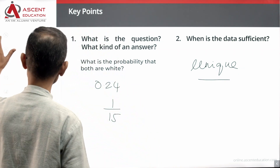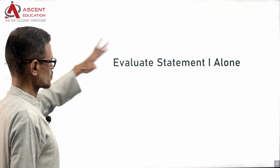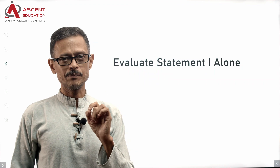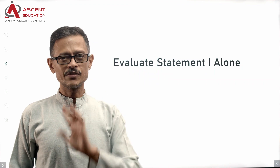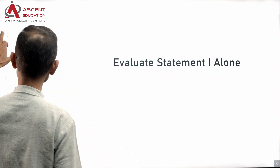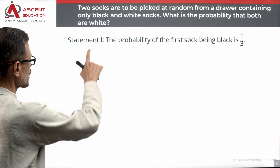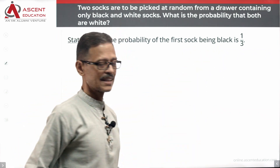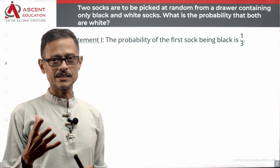Start by evaluating statement 1 alone. Statement 1 says: the probability of the first sock being black is 1 by 3.